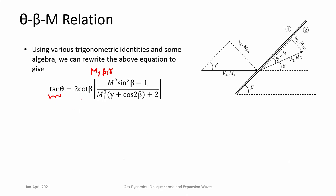If you know M₁ and theta (often the case — you know the body shape and the Mach number), you need to find the shock wave angle beta. This cannot be easily solved analytically; you need a numerical method to invert the relationship. Alternatively, these are plotted and available in any gas dynamics textbook, such as Fundamentals of Gas Dynamics by Zucker and Biblares.